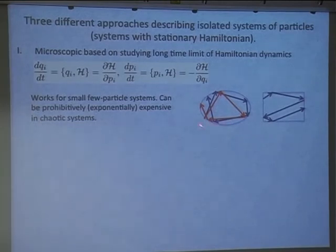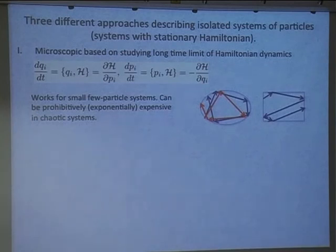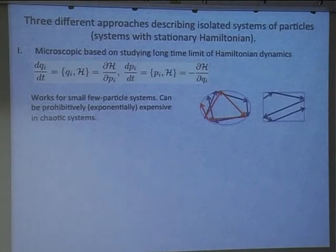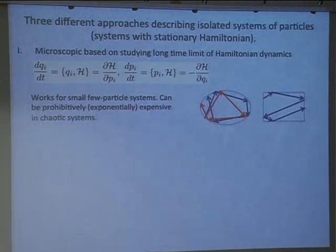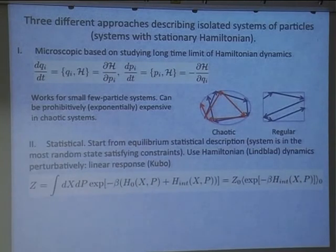From a cartoon picture, if our dynamics is chaotic then any small error — numerical error, imperfection in the Hamiltonian, coupling constants we don't know exactly, or imperfectly known initial conditions — will propagate, making it very expensive to follow trajectories in classical systems. The exceptions are integrable models, which we like to play with a lot.